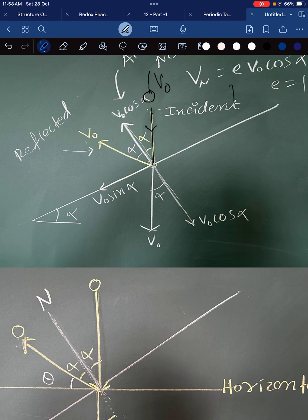When something is falling like this, its velocity has two components. One is perpendicular to the plane and another is parallel to the plane. If this angle is alpha, then this angle is also alpha. So if this is v naught, then this is v naught cos alpha and this is v naught sin alpha.